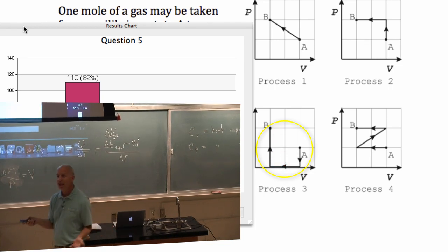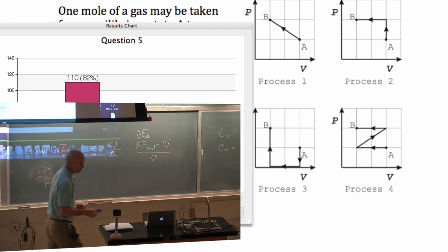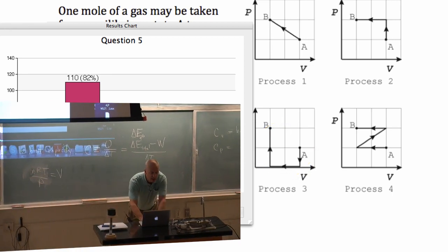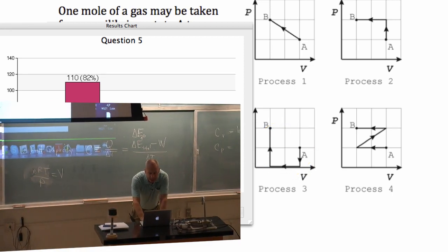And then I add heat to bring it back up to there. So those are just different ways of getting from A to B. The work energy is different, I think, in each of them. Although I'm not too sure about process four. I can't really remember how that one works.